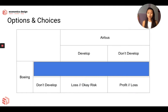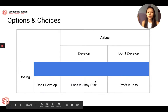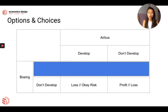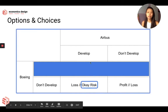What if Boeing doesn't develop at all — what will Airbus do? Airbus will also choose between okay risk versus a loss. If Boeing doesn't develop, there's an okay risk for Airbus if Airbus develops, because it's a lot of money being put into R&D. If they succeed, they will be the market leader, so that trade-off is an okay risk. If Airbus doesn't develop, it's status quo — Boeing will continue making a lot of money and being the market leader, and Airbus is going to lose out. So Airbus will choose okay risk, which is to develop.